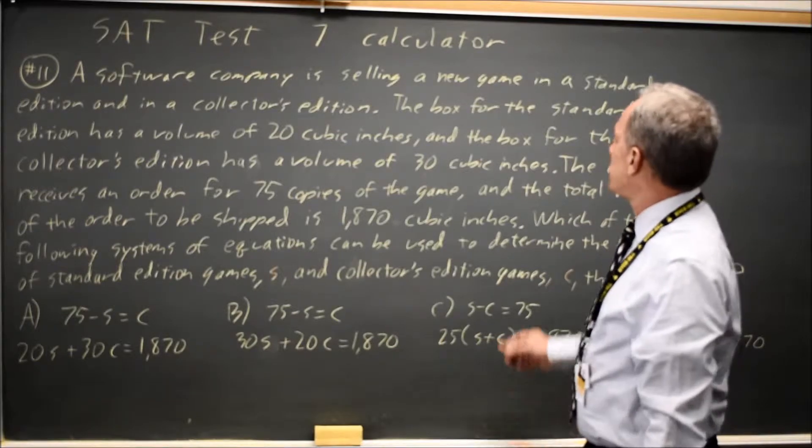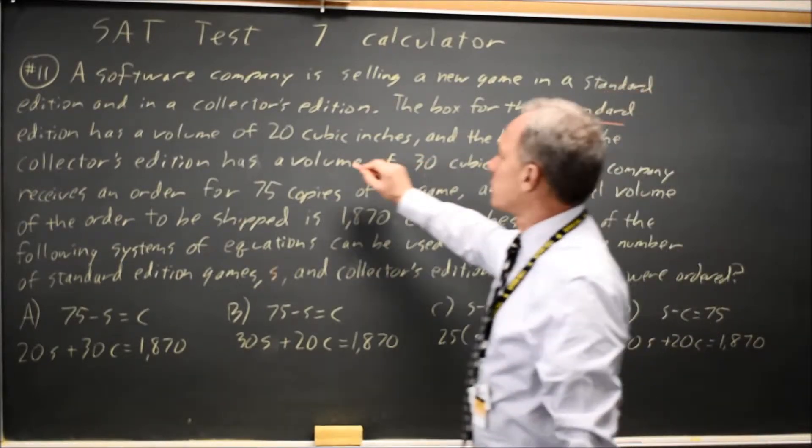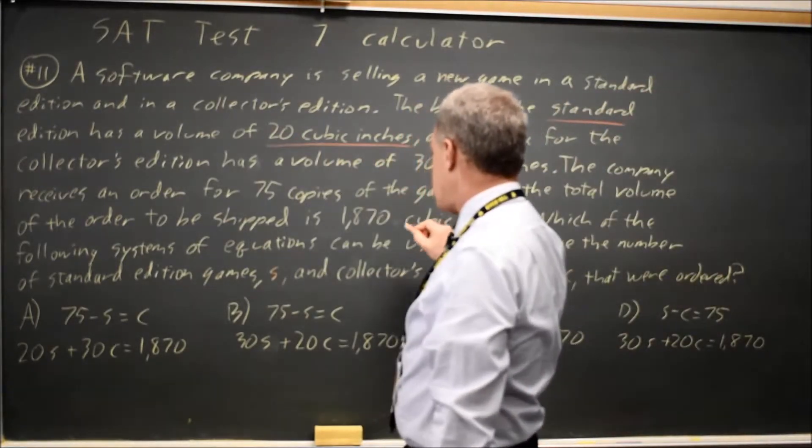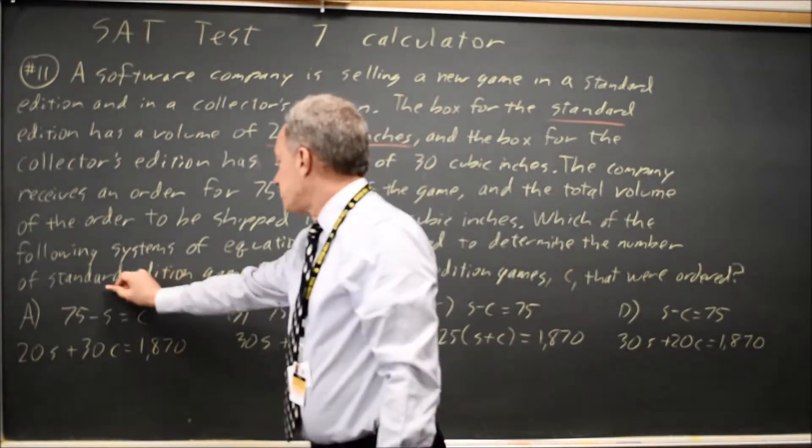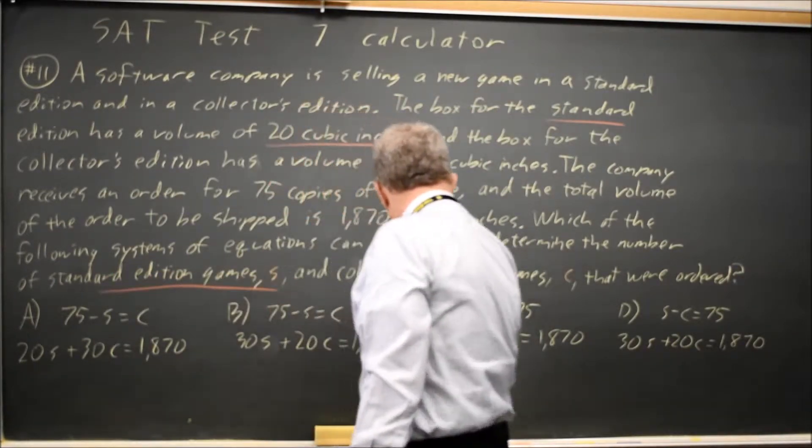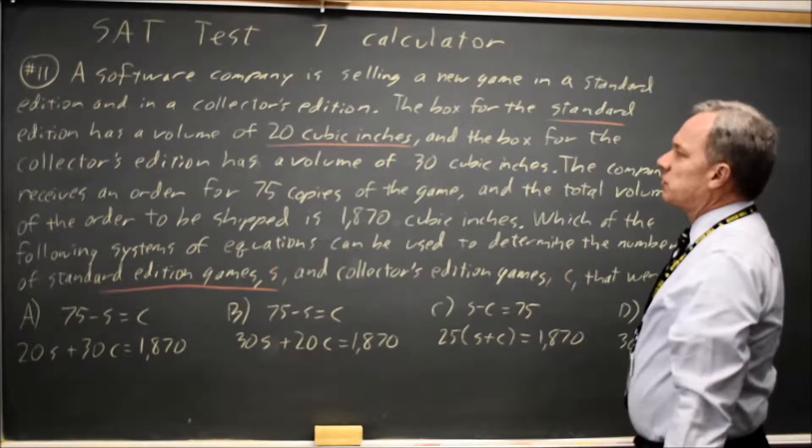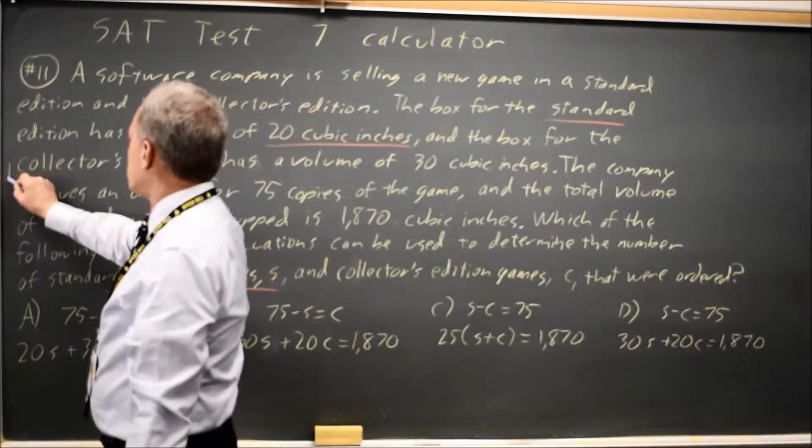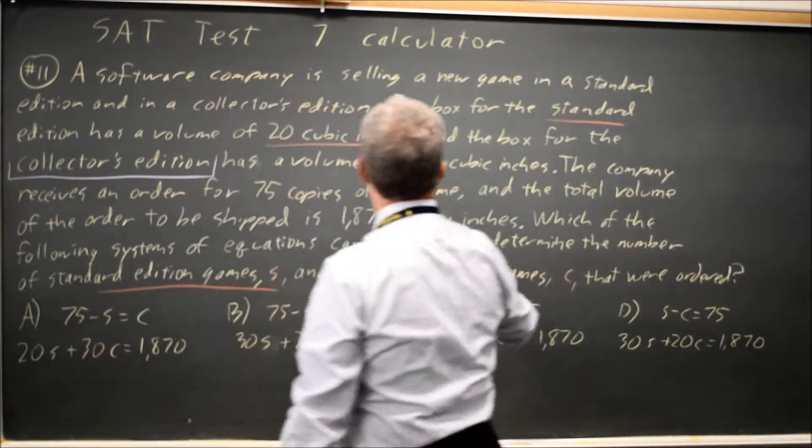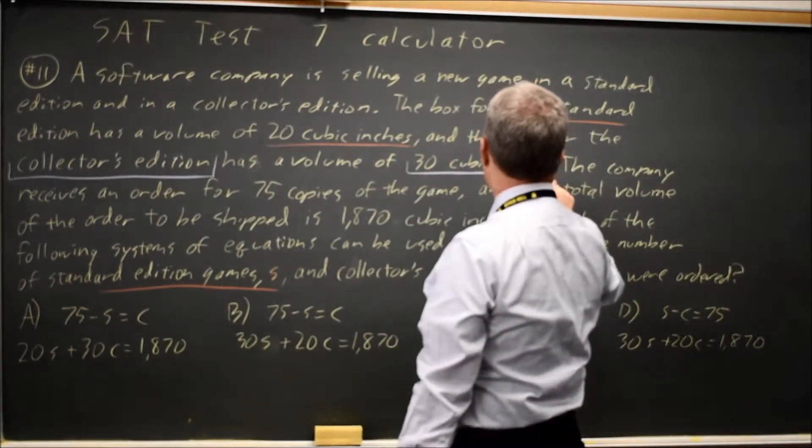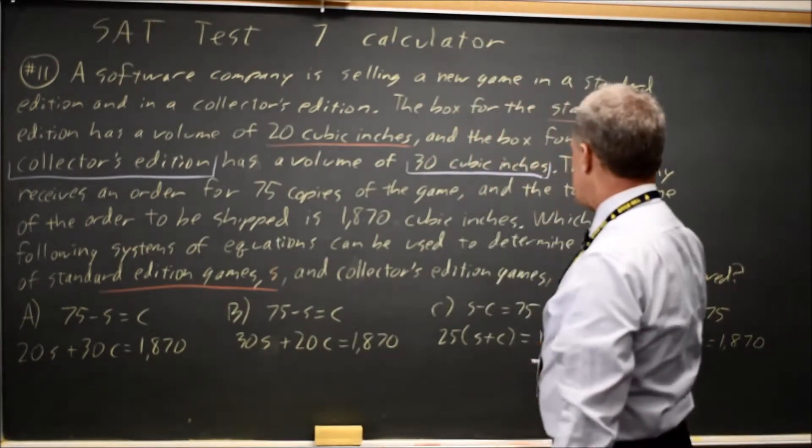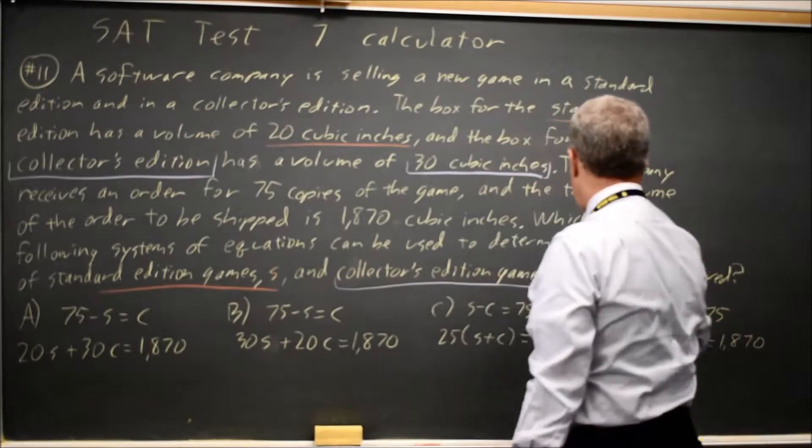In this case, we're told the standard edition has a volume of 20 cubic inches, and we're denoting standard edition with S. And we're told the collector's edition of this game has a volume of 30 cubic inches, and we're denoting the collector's edition with C.